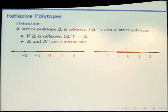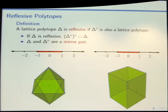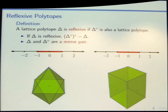Here are the one-dimensional reflexive polytopes — kind of nice to have those floating around just in case you want to do a really small example. And here's a three-dimensional pair of lattice polytopes: on this side we don't have as many lattice points — only the vertices are lattice points — and on this side we have lots more lattice points.